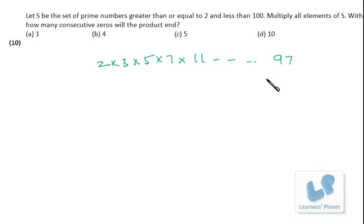After multiplying these 25 numbers, we will get a unit digit of 0. But we have to find out how many zeros will be there.